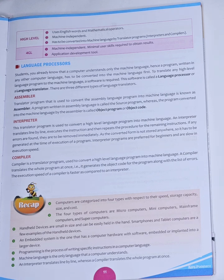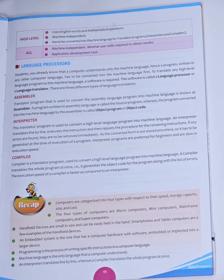So what is a language translator? A language translator is a software which is required to convert a high-level language program into machine language program. There are three different types of language translators: assembler, interpreter, and compiler.